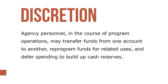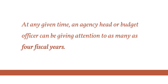Agency personnel in the course of program operations may transfer funds from one account to another, reprogram funds for related uses, and defer spending to build up cash reserves. At any given time, an agency head or budget officer can be giving attention to as many as four fiscal years.